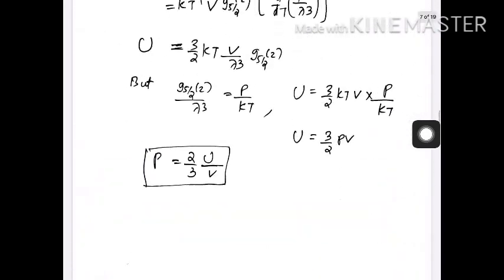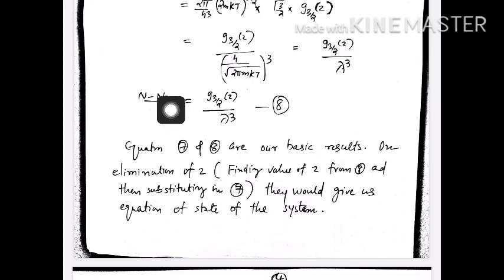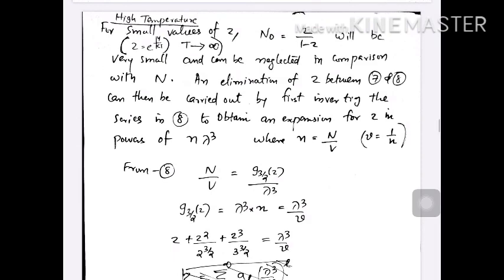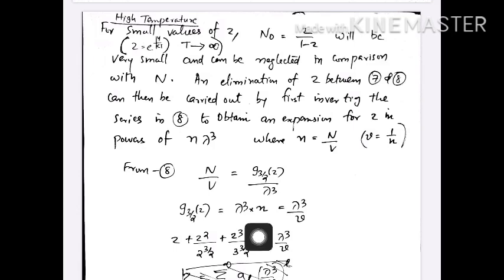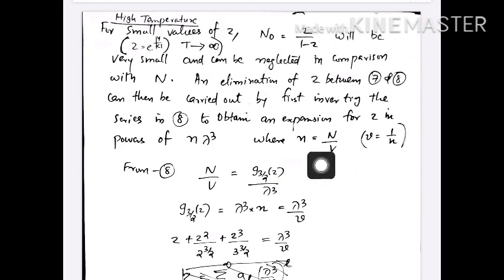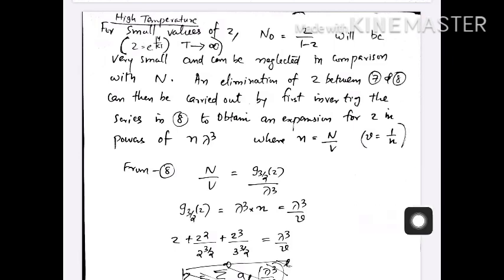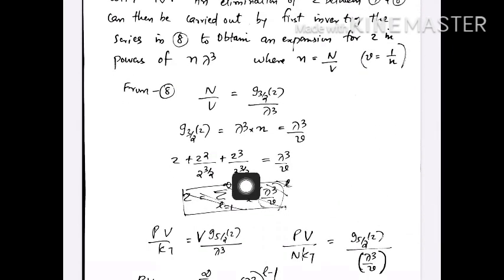So in this equation, N0 is neglected, giving N/V equal to g_{3/2}(z) over lambda^3. This is for high temperature. And g_{3/2}(z) equals lambda^3 times the number density n, where n is the particle density. The inverse of the particle density is the specific volume v equal to V/N, which is the volume occupied by a single particle.